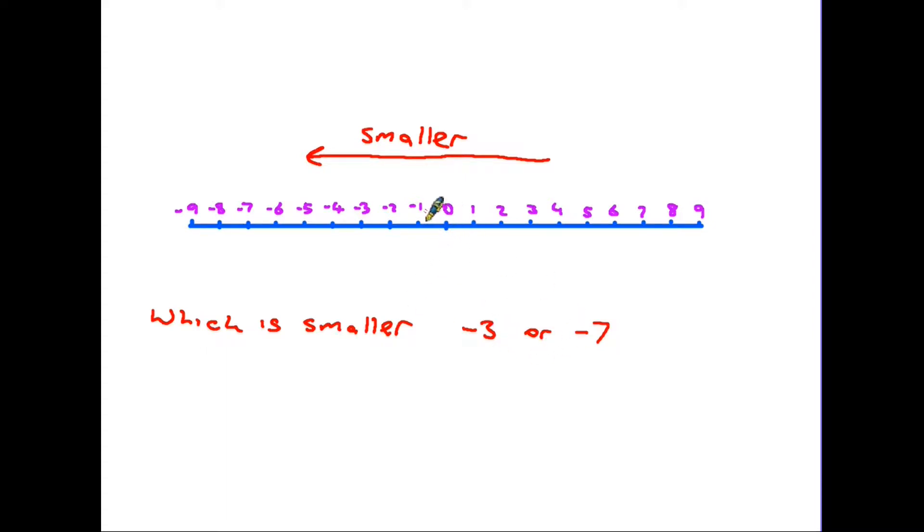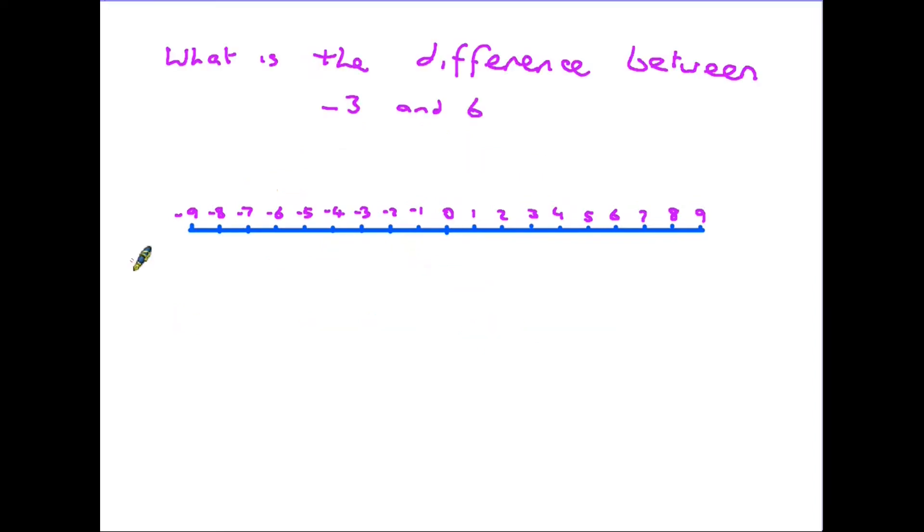Therefore minus seven over here is smaller than minus three. It's in that direction. So the opposite of course is that you are traveling in that direction, in which case the numbers are getting larger. Another typical question you may get asked is to find the difference between numbers.